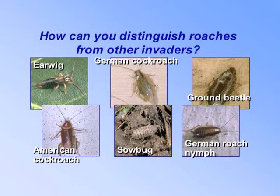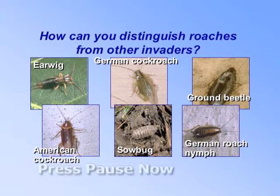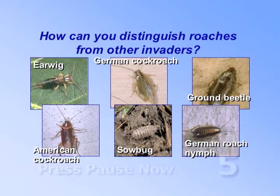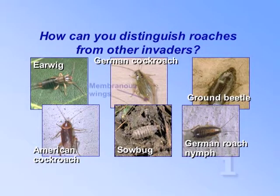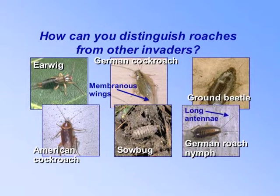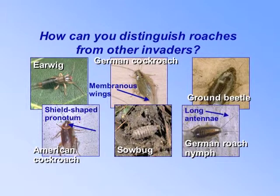How can you distinguish roaches from other invaders? Cockroaches have membranous wings, long antennae, and a shield-shaped pronotum behind their head.